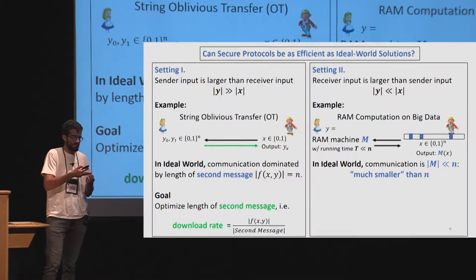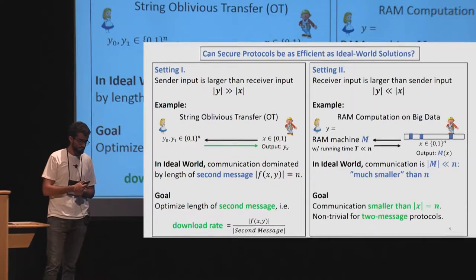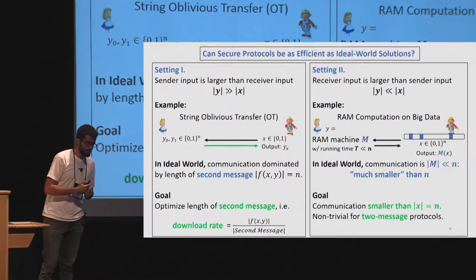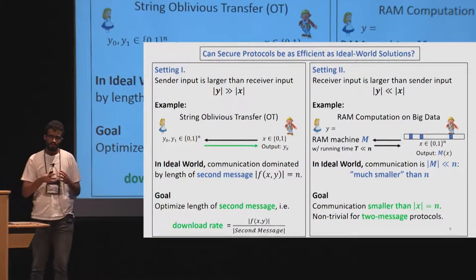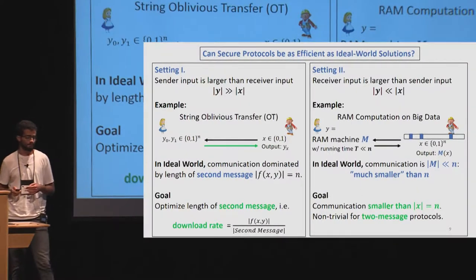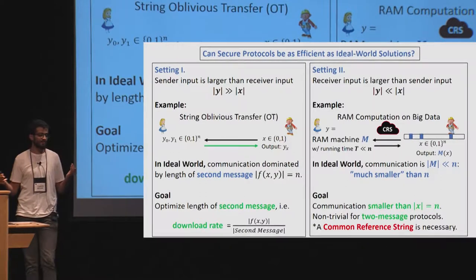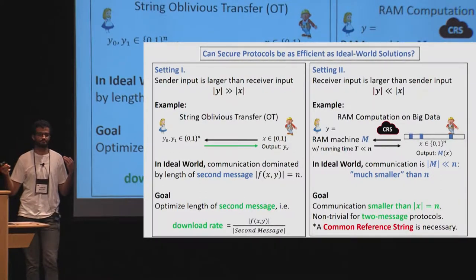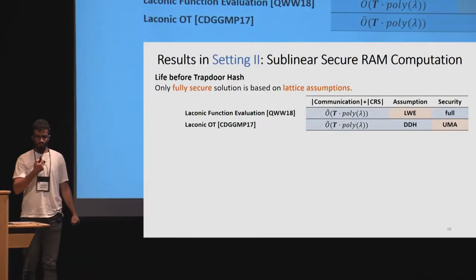Without security, Alice can just send the description of the machine M, and if M is small, the communication is independent of n and much smaller. Our goal for secure protocols is communication smaller than n, which is already non-trivial for two-message protocols. Also, if we want security, we need to work in a model where there is a common reference string that both parties can access.